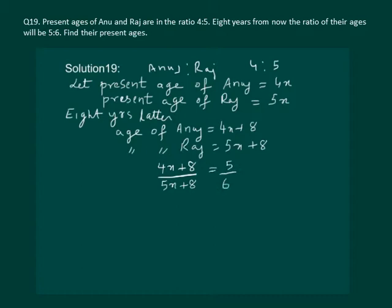And remember all the ages are in years. Now it remains to solve this equation. Both the sides are only rational. We can directly cross multiply the two sides and get 6 times 4x plus 8 is equal to 5 times 5x plus 8.